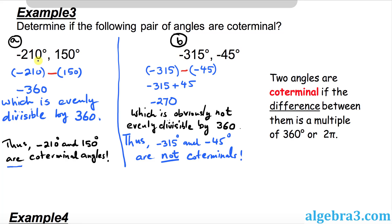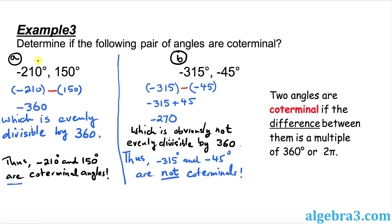In this example 3, you can see over here, A part is obviously divisible by 360. So these are examples of coterminal angles. But in part B, when you find the difference, it turns out to be negative 270, which is not evenly divisible by 360. So that really means that these two angles are not coterminal.